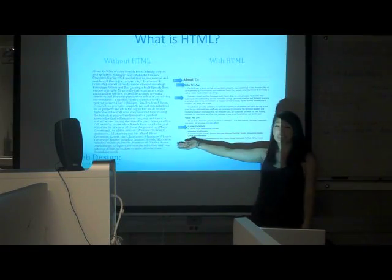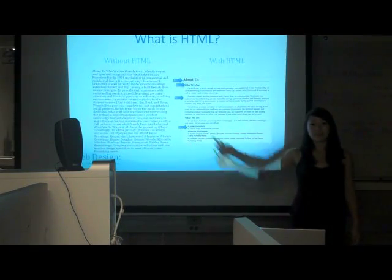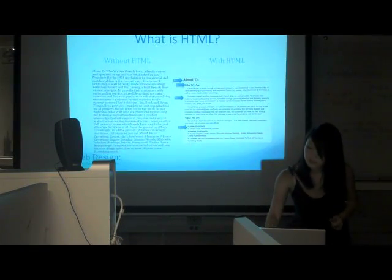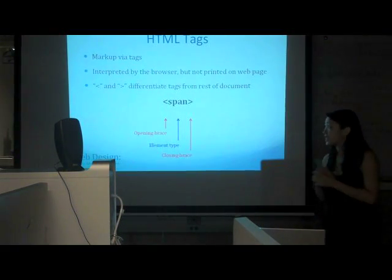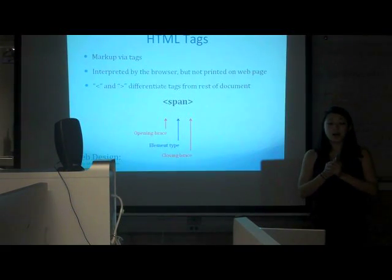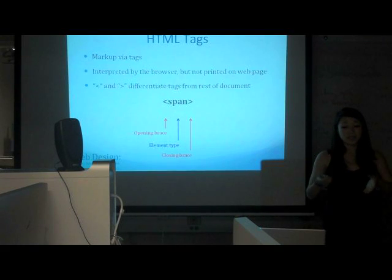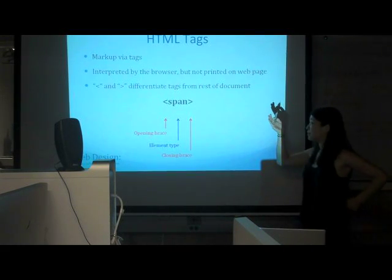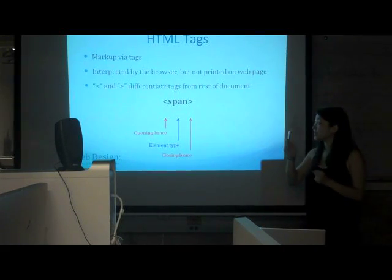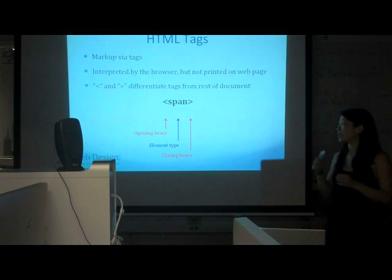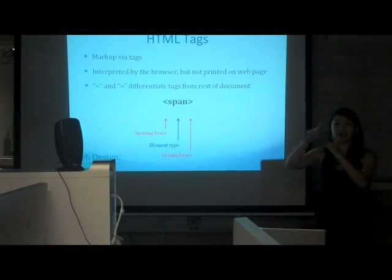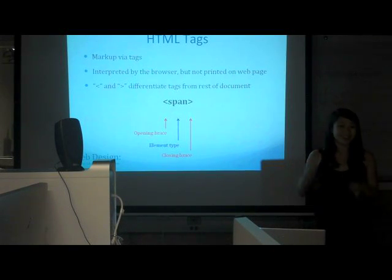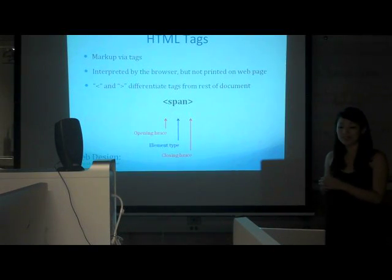I'm looking at a big plain text file. So I talked about using HTML tags, and you can apply markup to plain text using these tags. These tags are interpreted by the browser, but they're not printed on the web page. For example, we have the bracket P's — when you visit the website, you're not going to see that. It'll come rendered as different paragraphs.